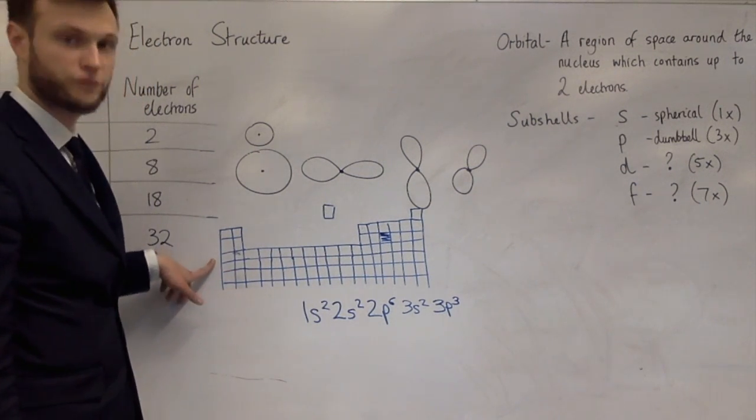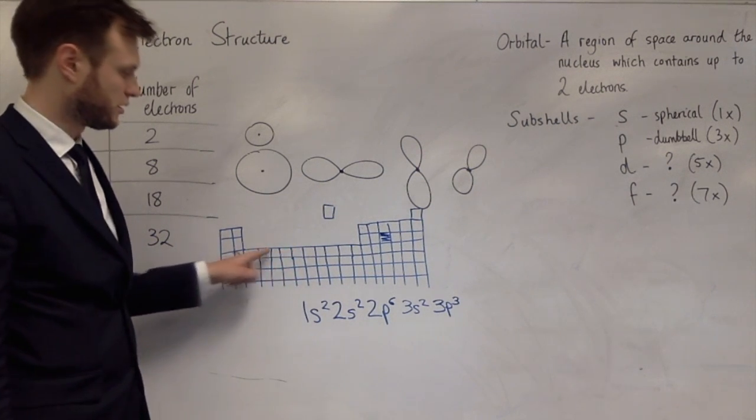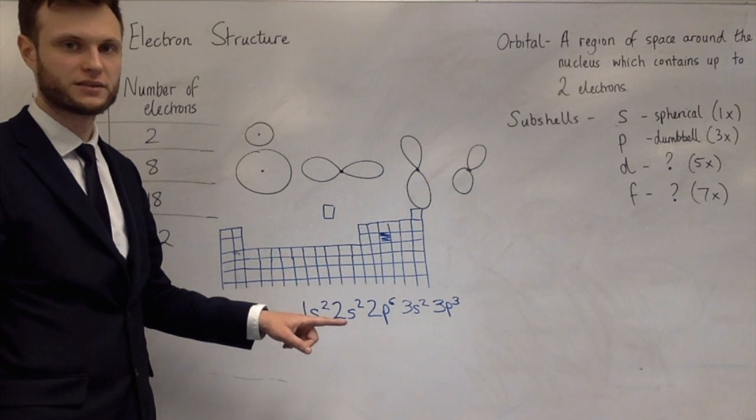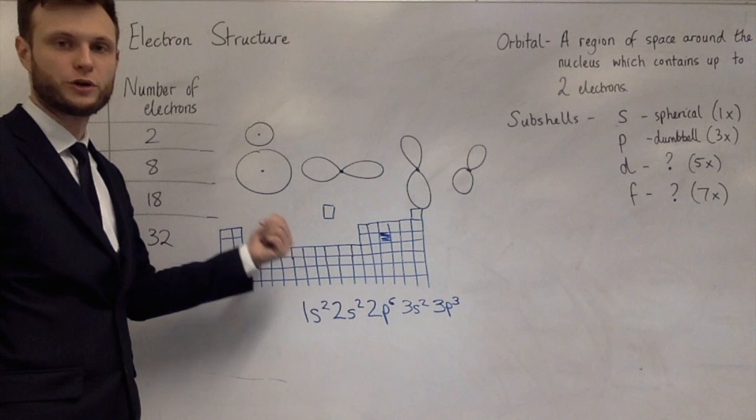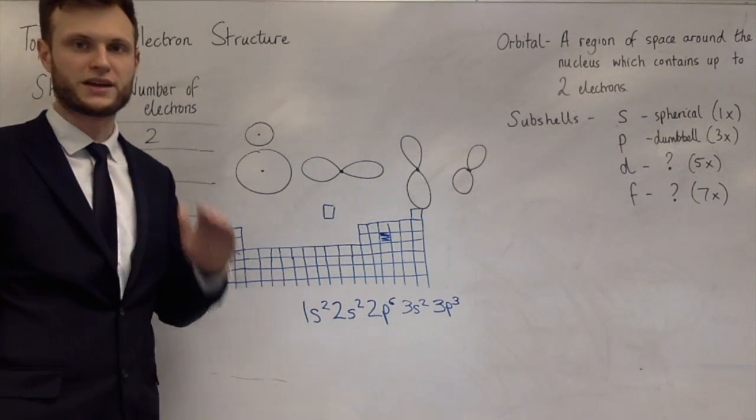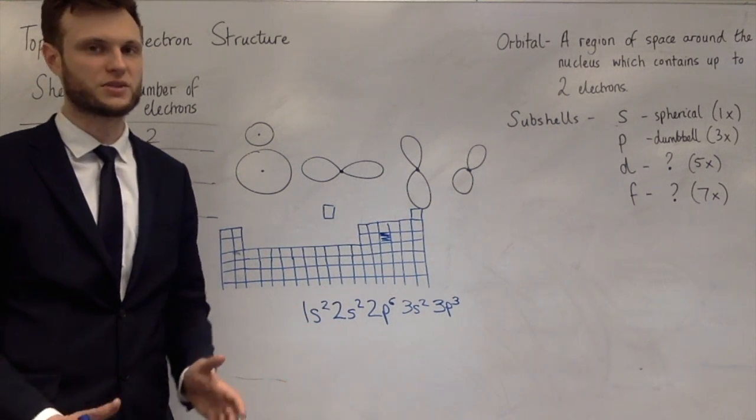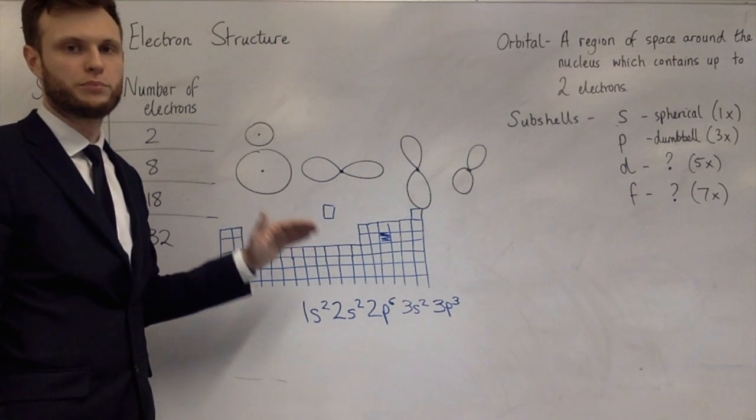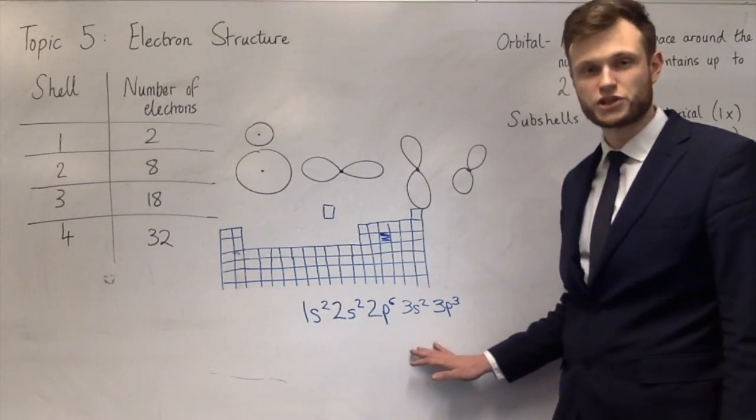After that, the order goes 4S, and then the 3D, which causes a little bit of confusion. But the 3D comes after the 4S and before the 4P. And the reason that the 4S is filled before the 3D is because the 4S energy is lower. So the electrons will go to the lowest energy, the same as they did at GCSE. And the 4S subshell is below the 3D subshell in terms of energy. So this is subshell notation.